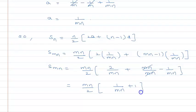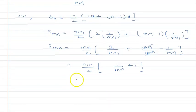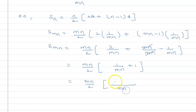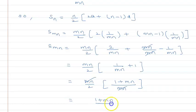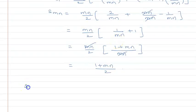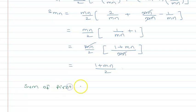So we have S_mn = mn/2 × (1 + mn)/mn. The mn terms cancel, giving S_mn = (1 + mn)/2. Therefore, the sum of the first mn terms is (1 + mn)/2. I hope this is clear. Thank you.